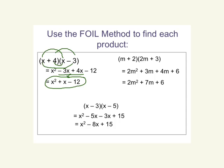Example two using FOIL — multiplying the first gives 2m squared, the outside gives 3m, the inside gives 4m, and the last gives 6. The outside and inside can be combined. Example three: (x − 3)(x − 5). First gives x squared, outside gives negative 5x, inside gives negative 3x, last gives 15. Combining like terms in the middle gives x squared minus 8x plus 15.